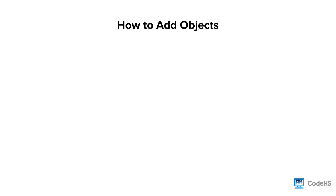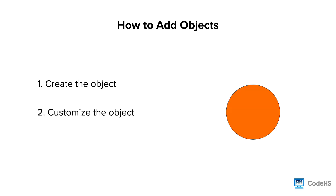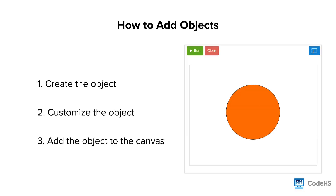Let's learn how to add objects to the canvas. When adding objects, there are three steps you need to follow. First, we need to create an object. Secondly, we need to customize the object. And lastly, we need to add that object to the canvas.